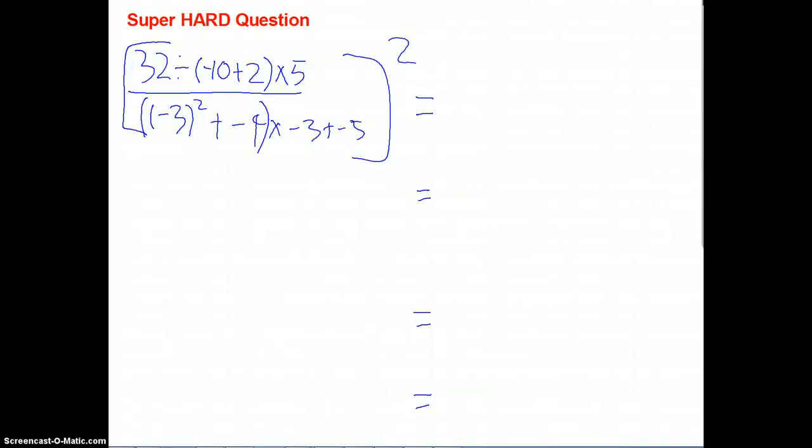First, remember PEMDAS. So here, we're going to write, what is negative 10 plus 2? That should be negative 8. So, 32 divided by negative 8 times 5.